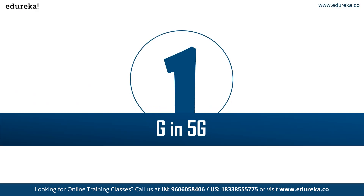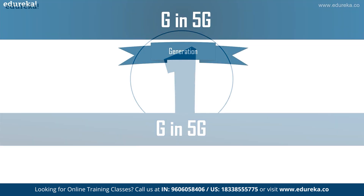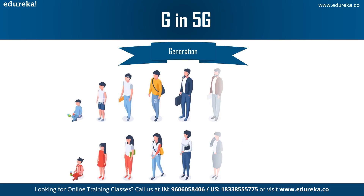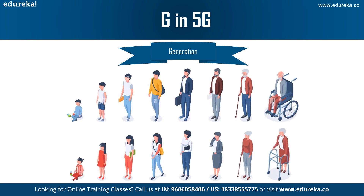First off, what do you mean when you say 3G, 4G? What is this G? The G in 5G is the generation of cellular networks. Just like in living beings, various generations flow with some common characteristics as well as some new advancements, so does in cellular network generations.